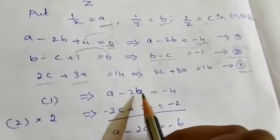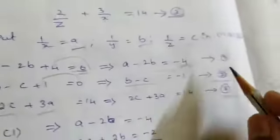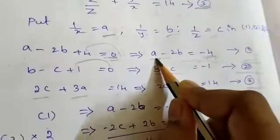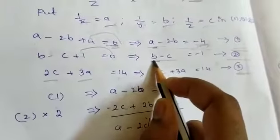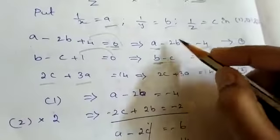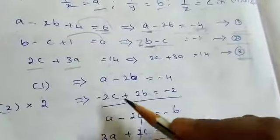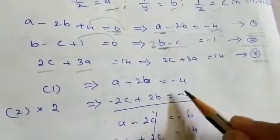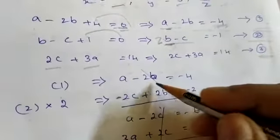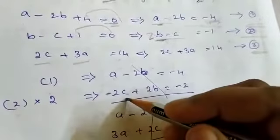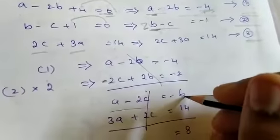From equation 1: A minus 2B equal to minus 4. Multiply equation 2 by 2 to get 2B terms. We get 2C plus 2B equal to minus 2, so B and B terms will cancel. This gives A minus 2C equal to minus 6 — keep this as equation number 4. We note that 3A plus 2C is the same as 2C plus 3A equal to 14.